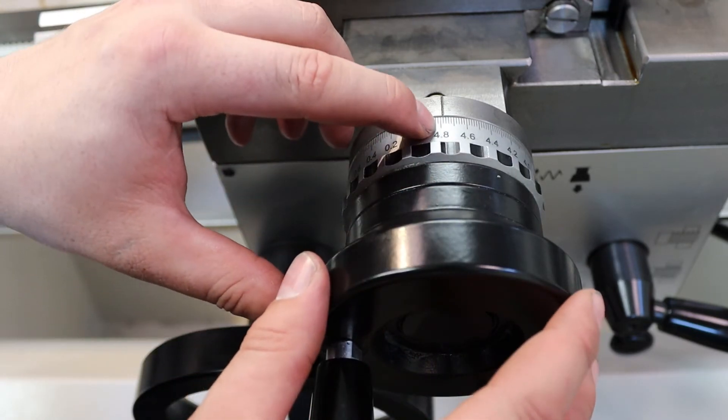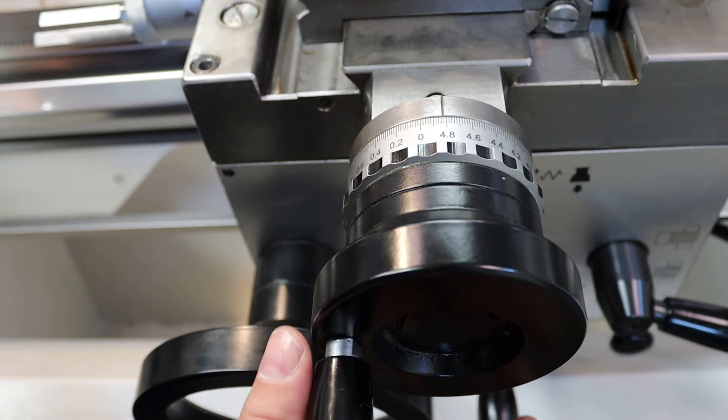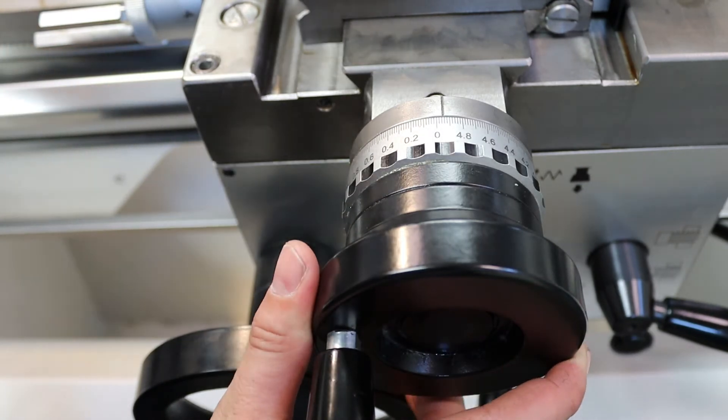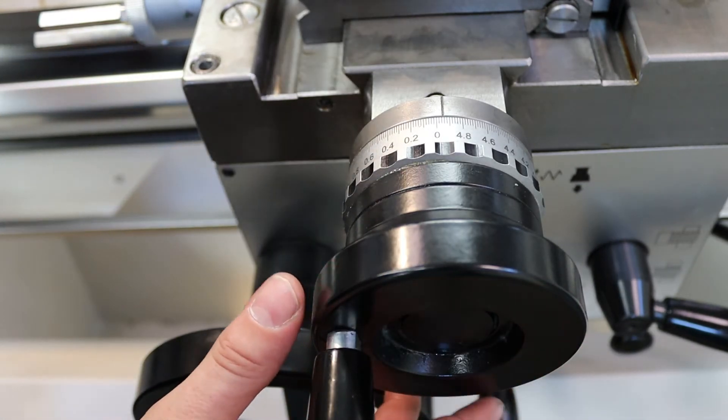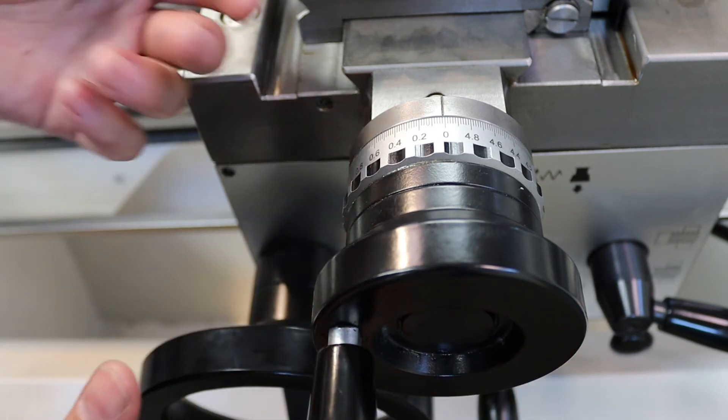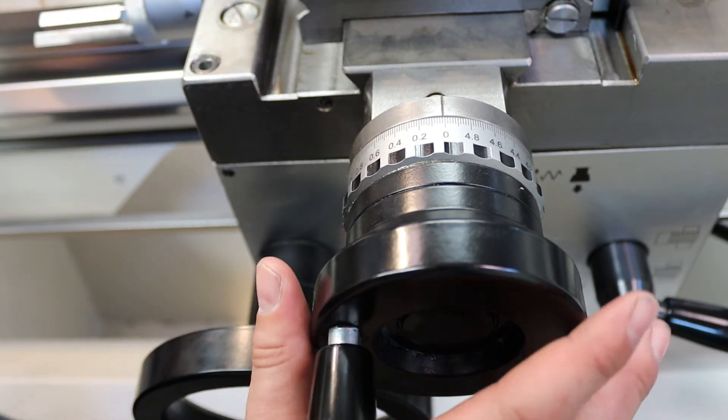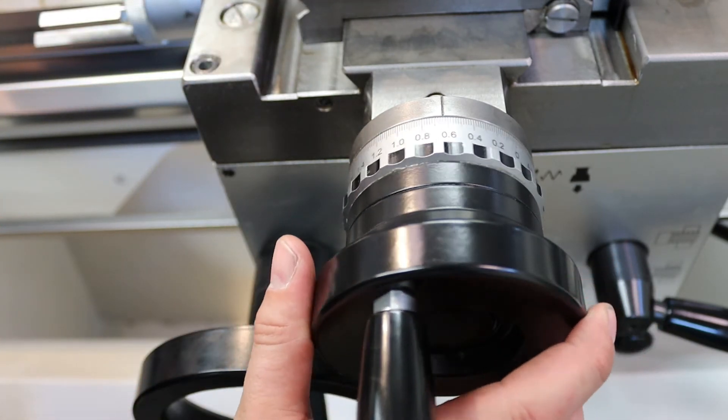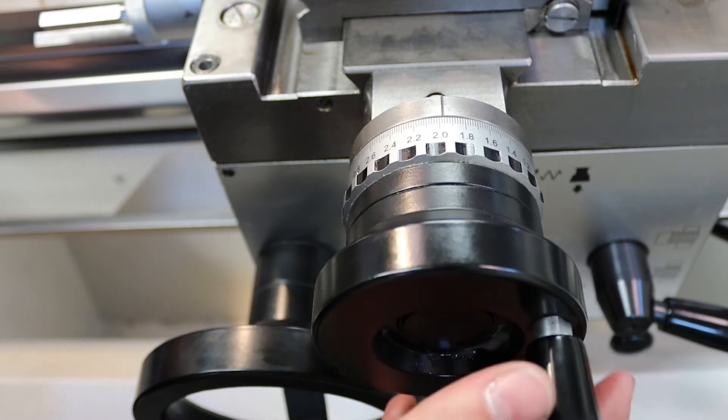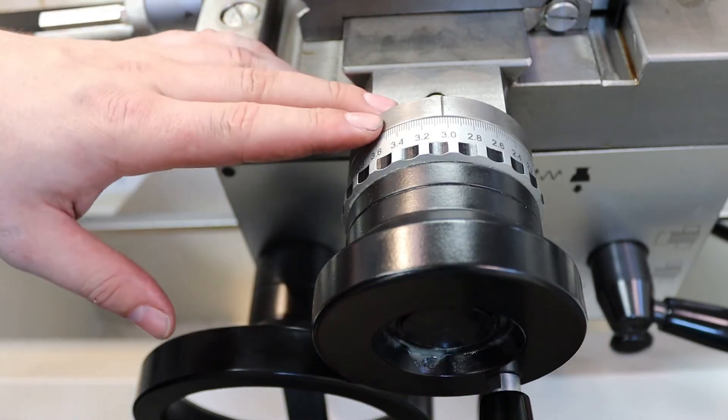So each indentation, each individual indentation is equivalent to 0.02 millimeters. So they're very, they are very small indentations. So you can get quite an accurate measurement. So in total, this handwheel moves five millimeters.